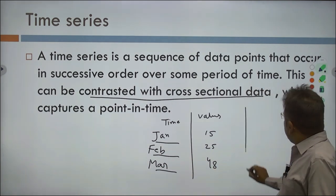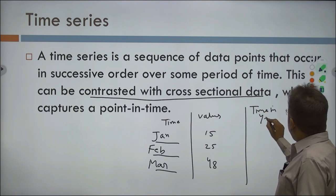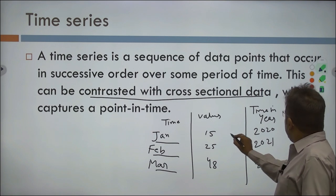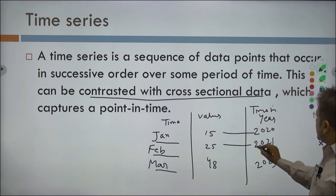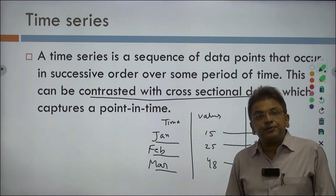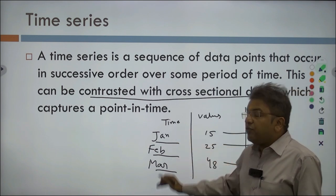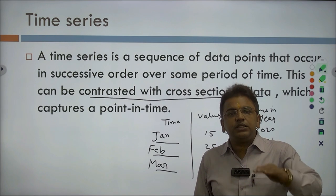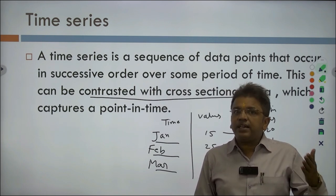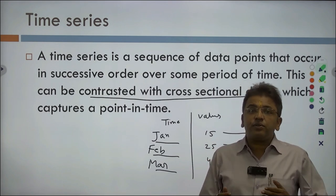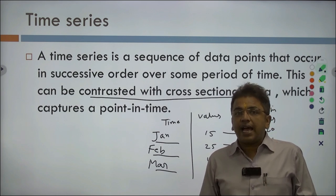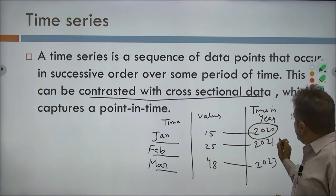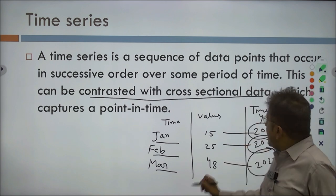You can also take year-wise data — 2020, 2021, 2023 — where in 2020 the value is 15, in 2021 it is 25, and in 2023 it is 48. Each value coincides with a different time frame. For example, in different seasons you use different things: in rainy season, raincoats and umbrellas; in winter, pullovers and sweaters; in summer, simple cotton clothes. These are decided by the help of time and the value which is present.